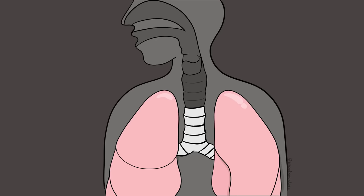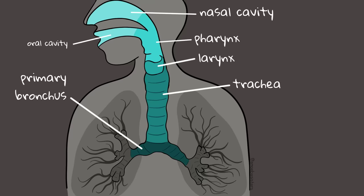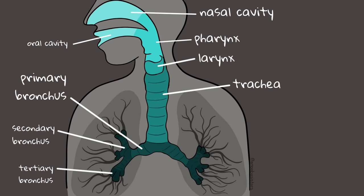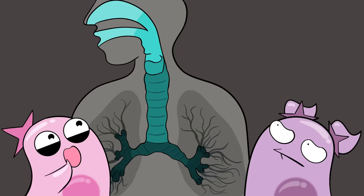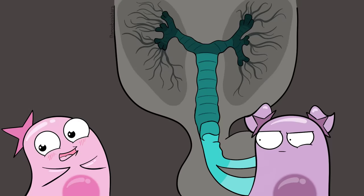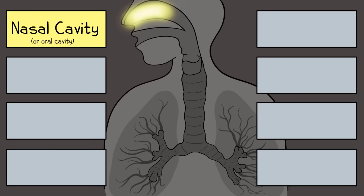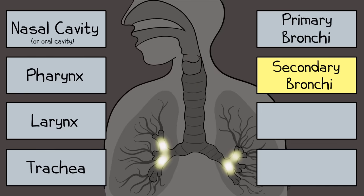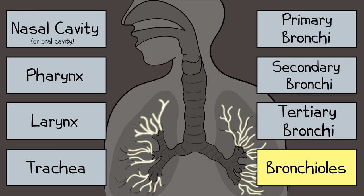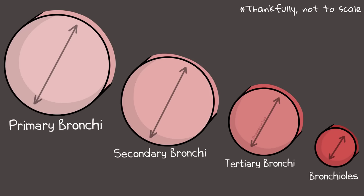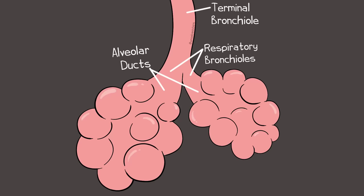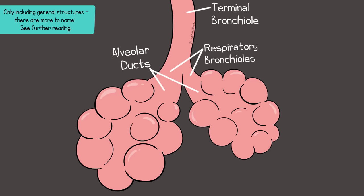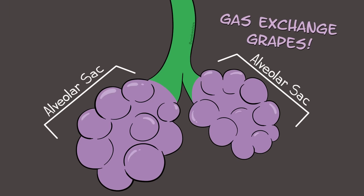Let's continue through the primary bronchi. Primary bronchi divide into secondary bronchi, then tertiary bronchi, and then smaller bronchioles — it kind of looks like an upside-down tree. A general recap: nasal cavity, pharynx, larynx, trachea, primary bronchi, secondary bronchi, tertiary bronchi, bronchioles. Diameter gets smaller as you go through these areas. Beyond the terminal bronchioles, there is branching into respiratory bronchioles and then onto alveolar ducts. Each alveolar duct is surrounded by alveolar sacs, which look a lot like a bunch of grapes.